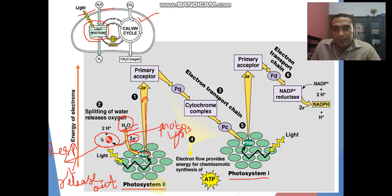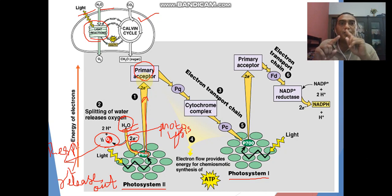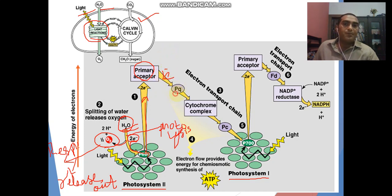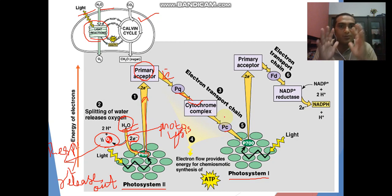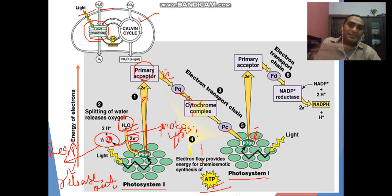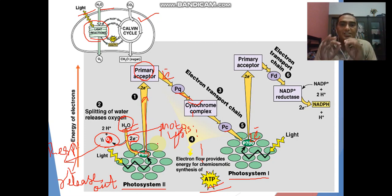Water breaks and two electrons are absorbed by the primary acceptor. After this, the electron energy is released. Plastoquinone (PQ) absorbs and moves the electrons to the cytochrome complex system, where electron energy is released. This energy is used for ATP formation as electrons move from photosystem 2 to photosystem 1.